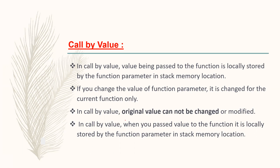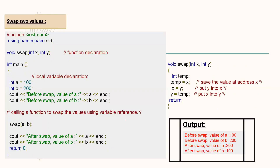In call by value, the original value cannot be changed or modified. When you pass a value to the function, it is locally stored by the function parameter in a stack memory location. If you change the value of a function parameter, it is changed for the current function only. For example, swapping of two numbers.